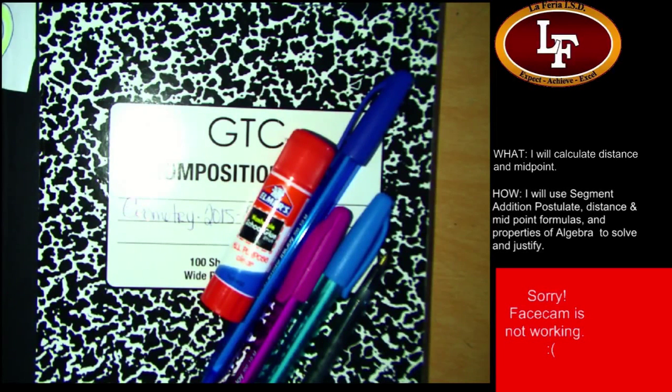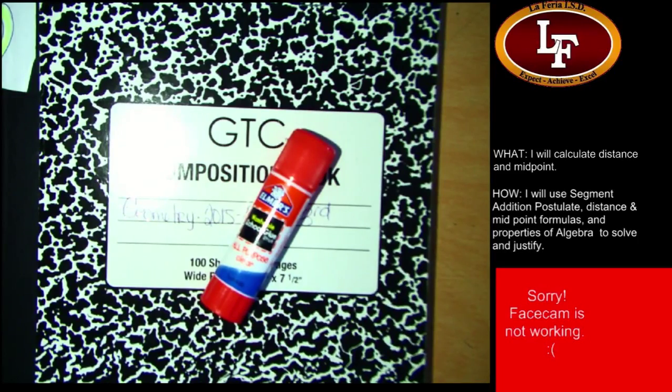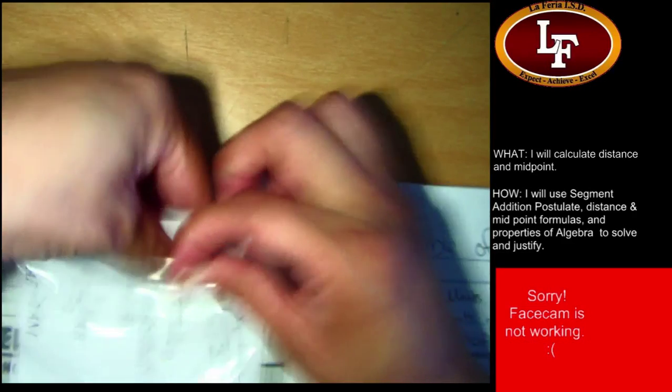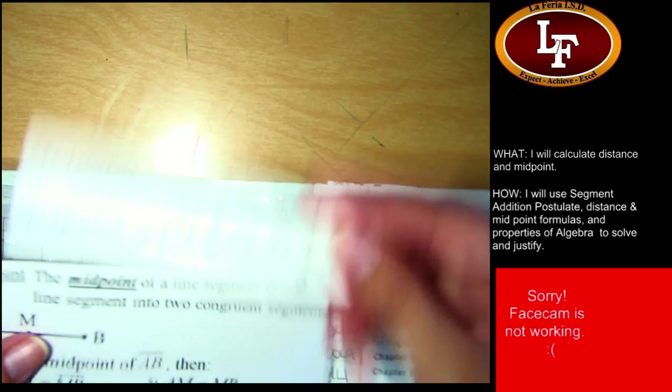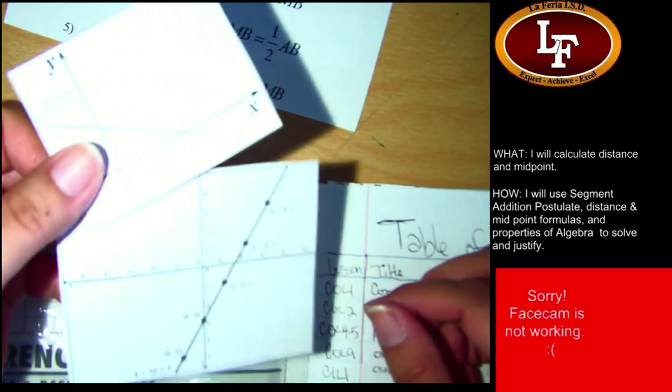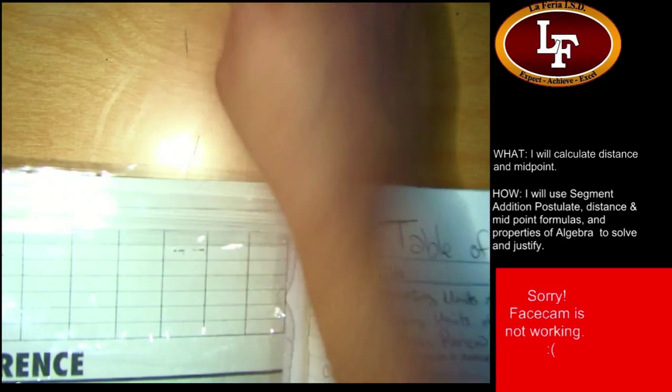So we're going to be finishing up from yesterday. If you still need to cut out the items from that page, make sure you have some scissors. You definitely need glue, even if you have already cut them out. I need to get mine out of my handy-dandy pocket. There should be four items. This one, this one, and then two graphs. We're going to be using all four of those items today.